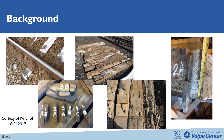The background of this research originates from several recent derailments caused by broken spikes. Those broken spikes were found typically on curved track with elastic fastener systems. The breakage location of the spike was found usually 1.5 to 2 inches below the surface of the timber tie. This slide shows some pictures taken after the derailment in Vandergrift, Pennsylvania.